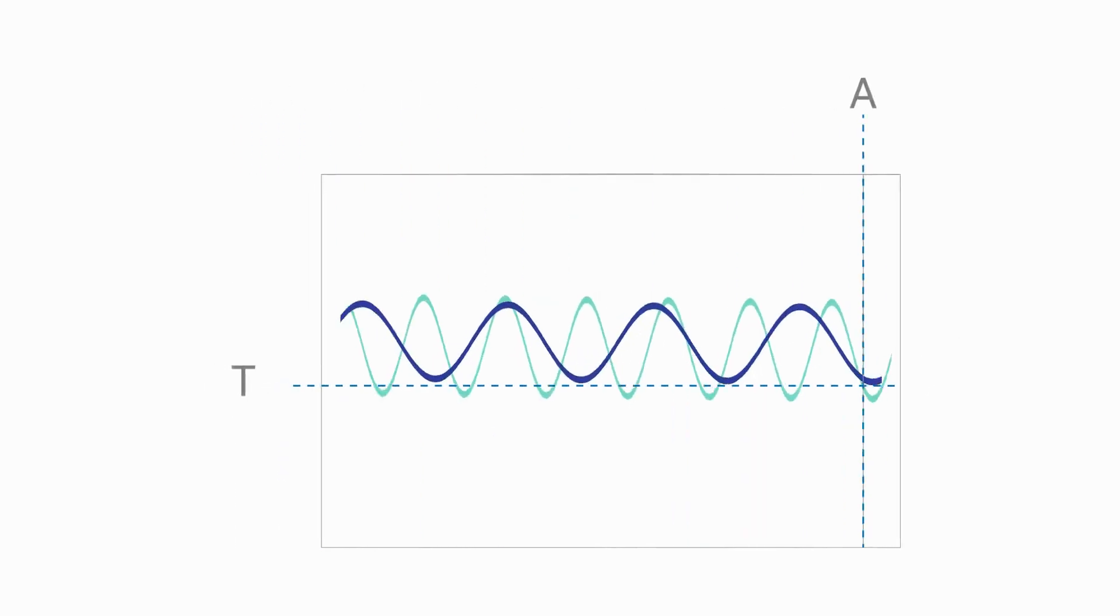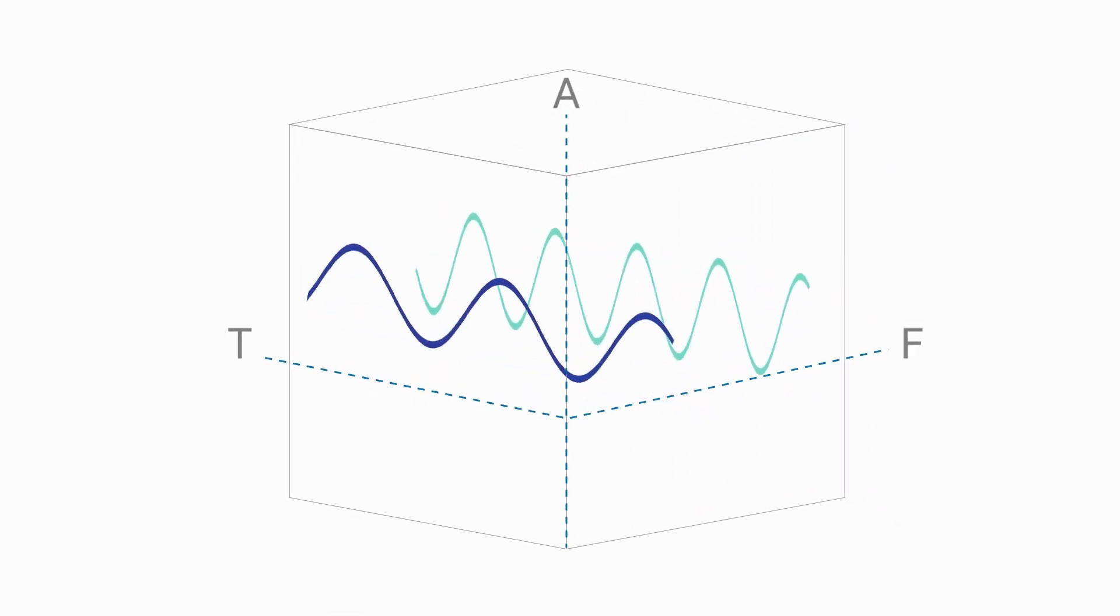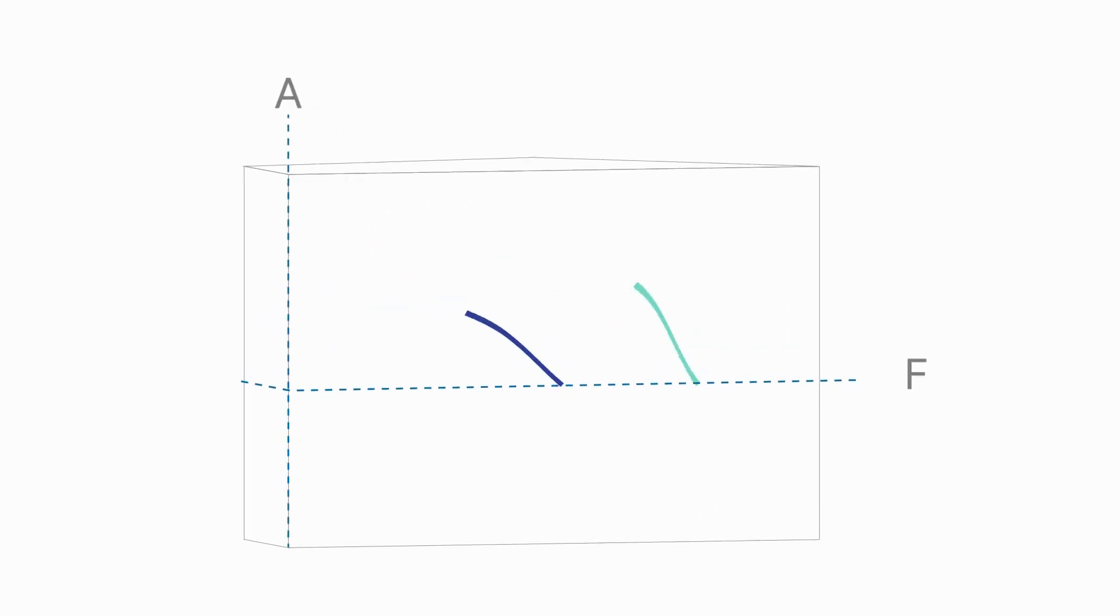So the FFT reverse engineers that complex time waveform, breaks it down into individual sine waves. And it's in this way that we can take a complex time waveform, a measurement on a machine and break it down into its simpler frequencies.